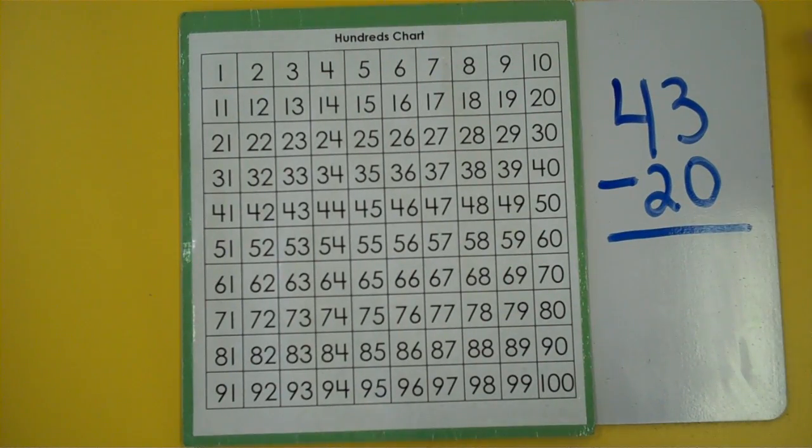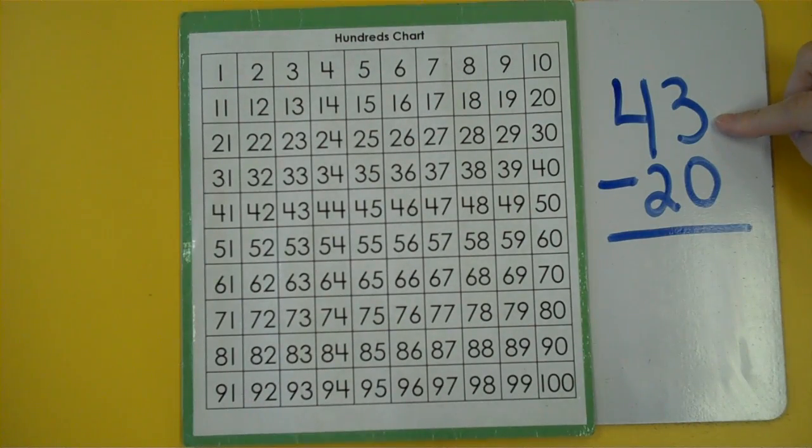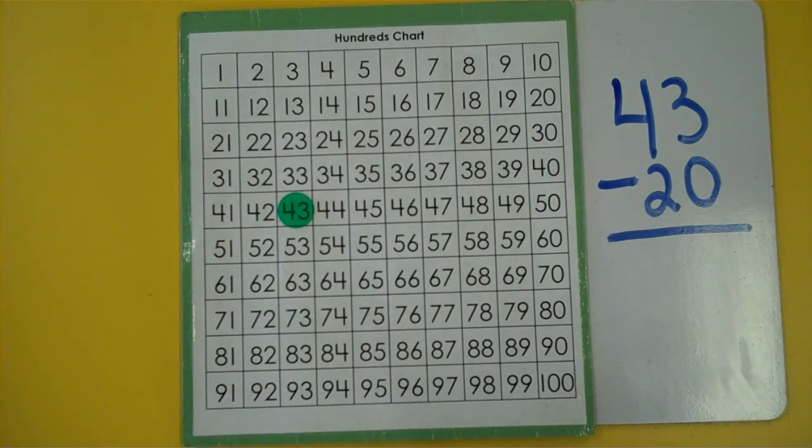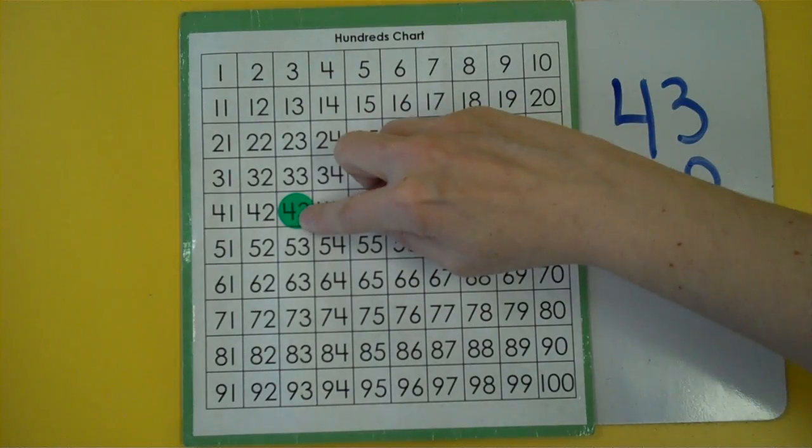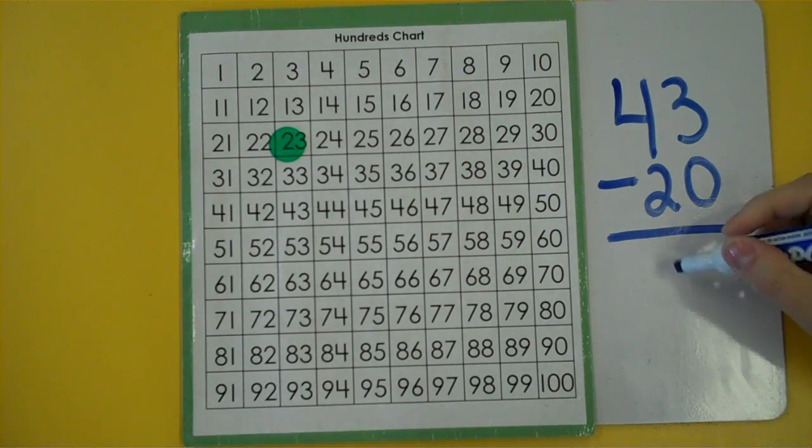I'm going to start at 73. Oh that's not correct. I'm going to start at 43. And I'm going to take away 20. That means I'm going to skip count by 10 and I'm going to go up. 10, 20. 43 take away 20 is 23.